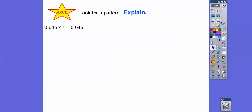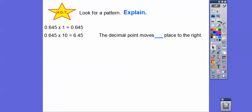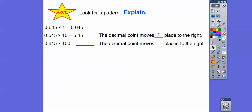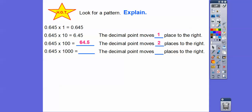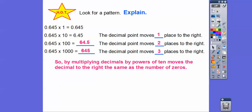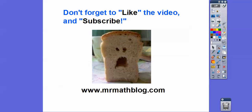Look for a pattern here. .645 times 1 is .645. When we multiply .645 times 10, it gives us 6.45 — the decimal moved one place to the right. There's one zero in 10 — one place to the right. If we multiply by 100, it gives us 64.5 — there are two zeros in 100 and the decimal moves two places to the right. Multiply by 1,000 and it moves three places to the right: 645. When multiplying decimals by powers of ten, the decimal moves to the right the same number of places as there are zeros in the power of ten. I hope that lesson helps — take care!